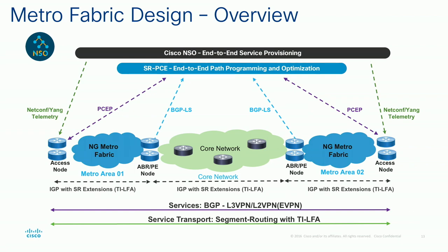Segment routing is a critical part of this. I have Metro Fabrics on either side of a core, but the core is still part of it — it's an SR-enabled core that enables all this end-to-end transparency.